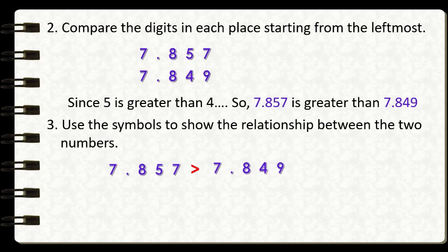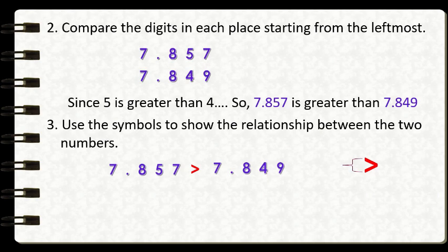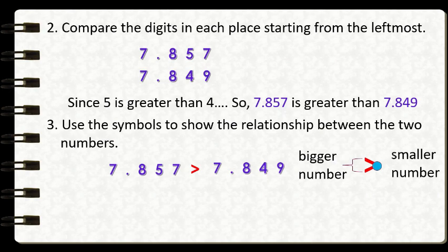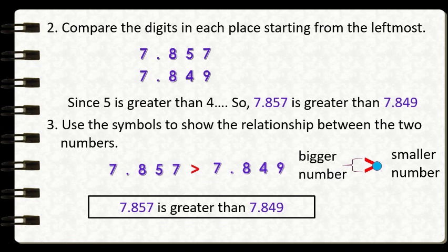If you are confused about when to use greater than or less than, take note that in this symbol, there is a big open side and a small pointy side. Remember that the big open side always faces the bigger number and the small pointy side faces the smaller number. That's why we use the greater than symbol, since 7 and 857 thousandths is greater than 7 and 849 thousandths.